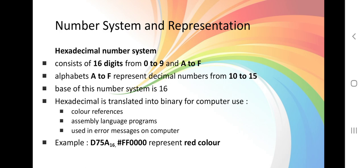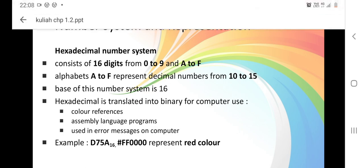Example of hexadecimal numbers, D75AB and FF0000 is to represent colors. So, I think that is all for today. Have a nice day. Thank you.